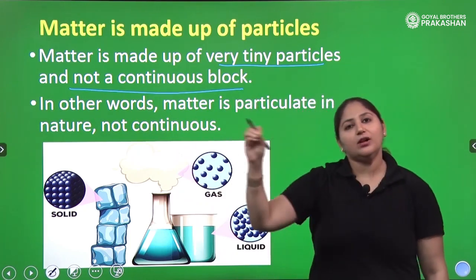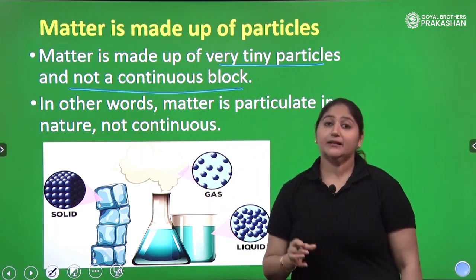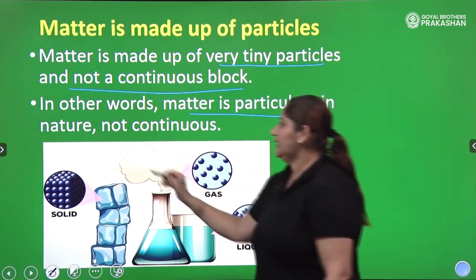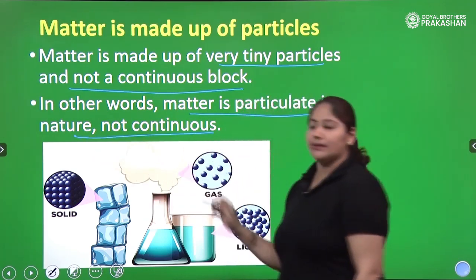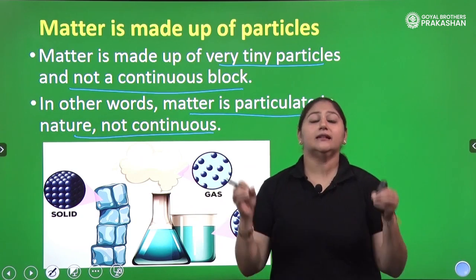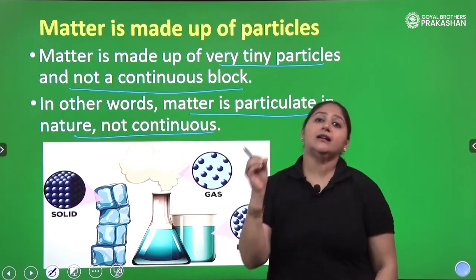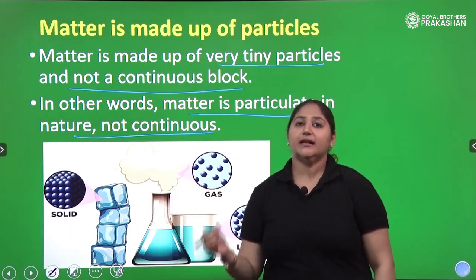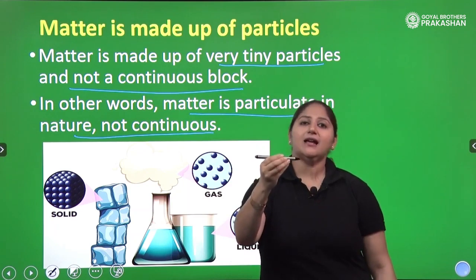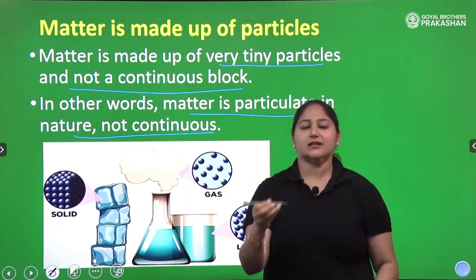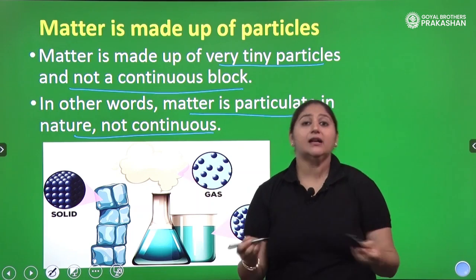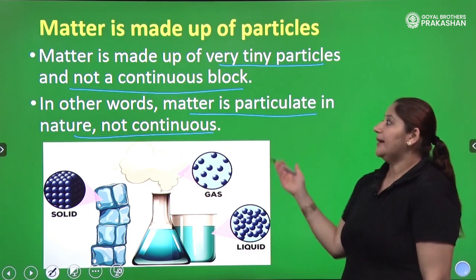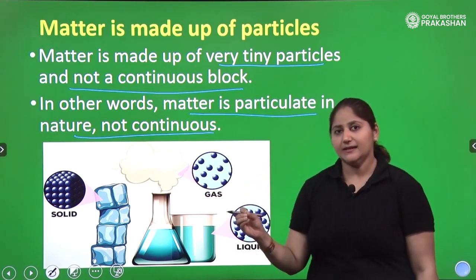So we can say that matter is made up of very tiny particles and not a continuous block. Matter is particulate in nature and not continuous. There are millions of small particles in every piece of matter — for example, this pen has a lot of particles, this remote has a lot of particles, and even the human body has a lot of particles.